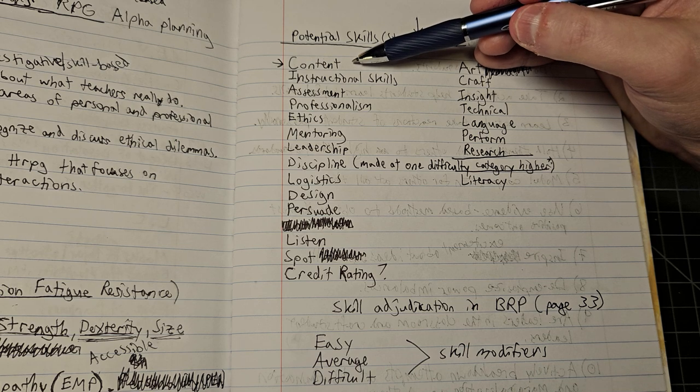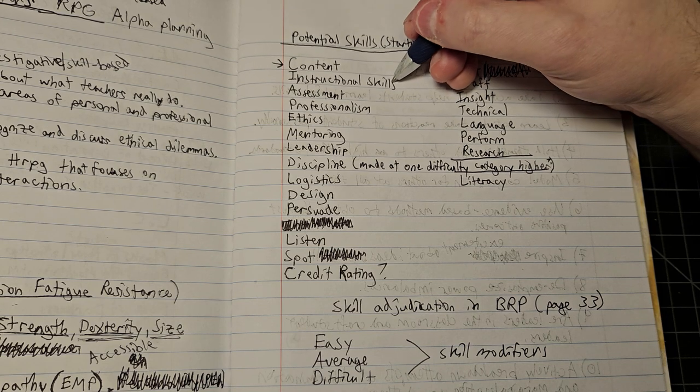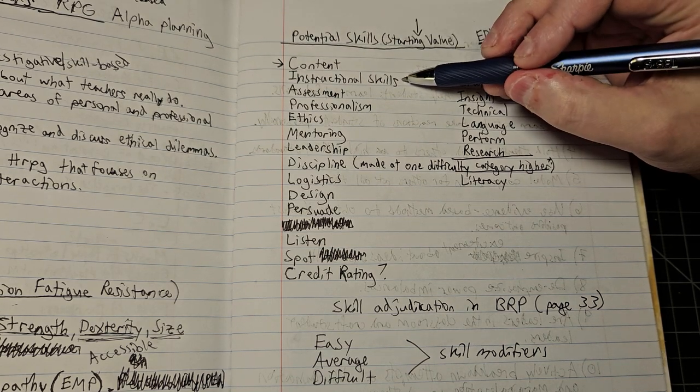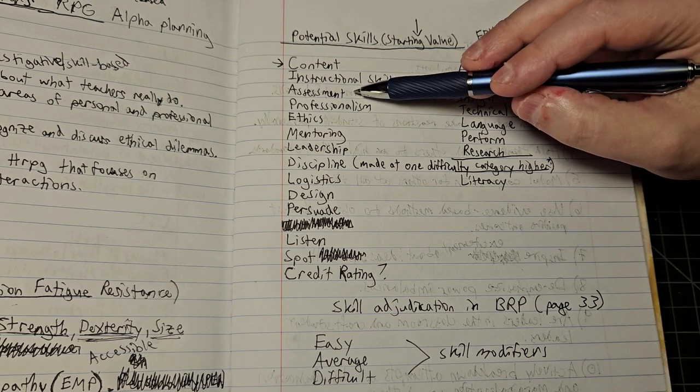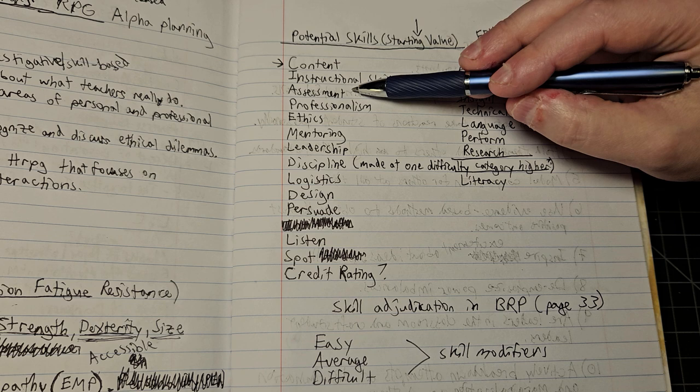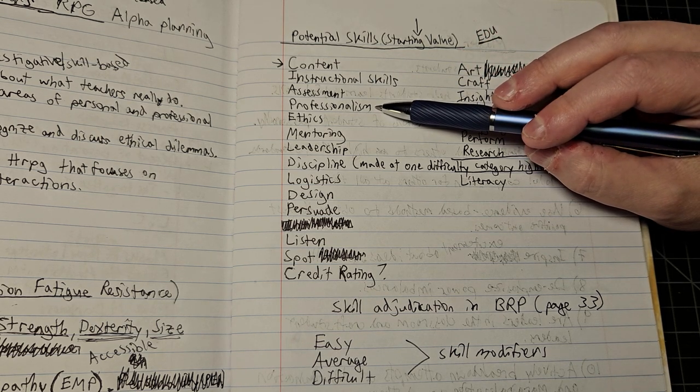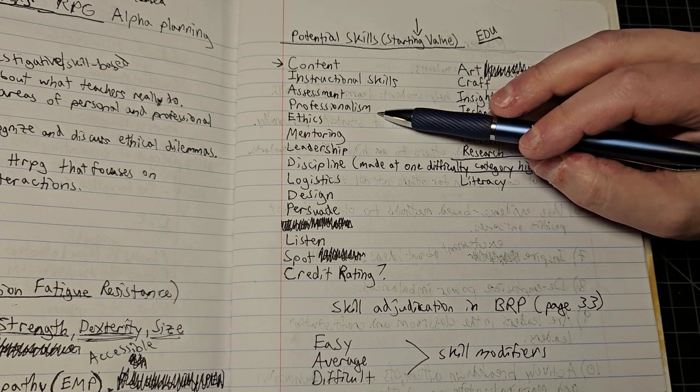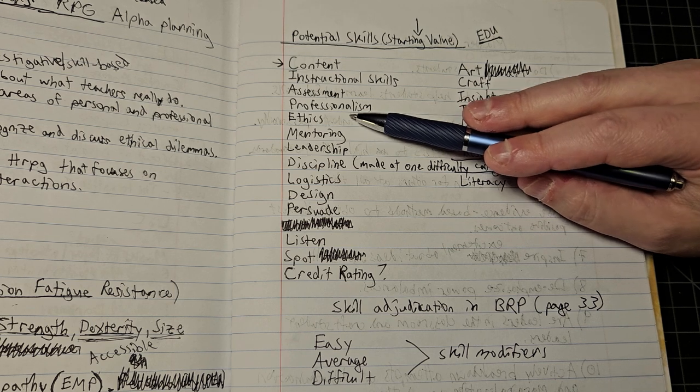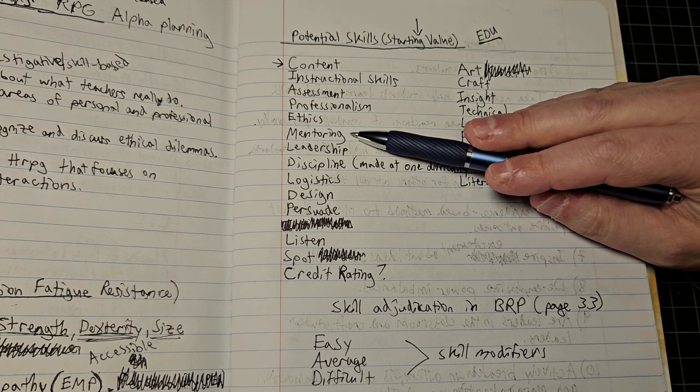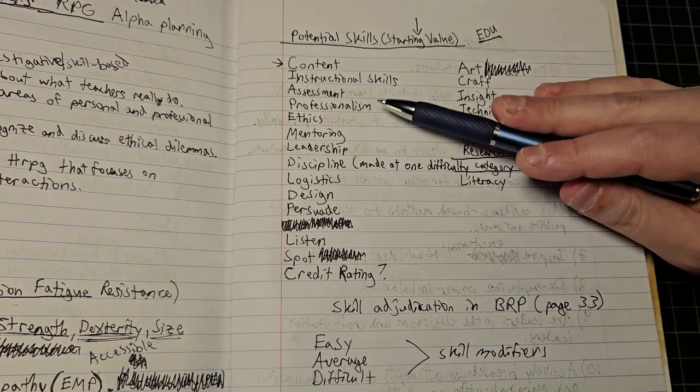Other skills: instructional skills - setting up situations to help students think about ideas. Assessment - measuring students to see how successful we've been and where we need to go next. Professionalism - how to have professional conversations, how to treat students fairly, which is also associated with ethics - is a critical skill in education. How to successfully mentor people, how to successfully lead an environment.